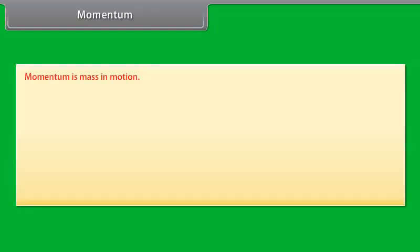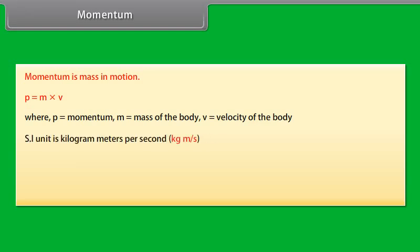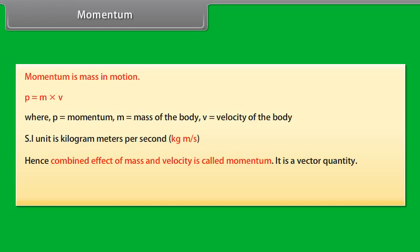Momentum is mass in motion. P equals M into V, where P is momentum, M is mass of the body, and V is velocity of the body. SI unit is kilogram meters per second. Hence combined effect of mass and velocity is called momentum. It is a vector quantity. The change of momentum of an object is proportional to the applied unbalanced force in direction of force.